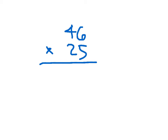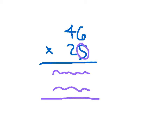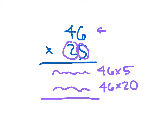To review again, we have 46 times 25. On that first line, I'm going to figure out the product of 5 times 46. On the second line, I'm working with that second digit. That second digit is worth 20, so that's the product of 46 times 20. When we figure out the product of 46 times 20, we'll place a 0 there because then we can just figure out the product of 46 times 2.